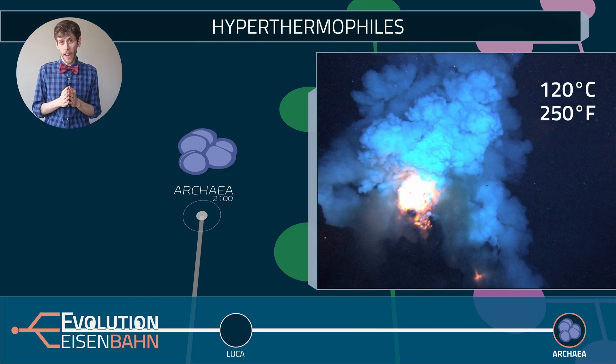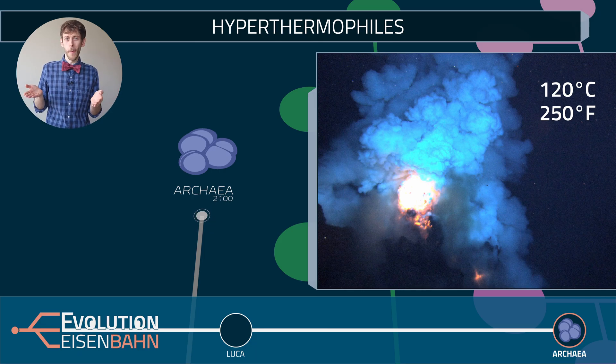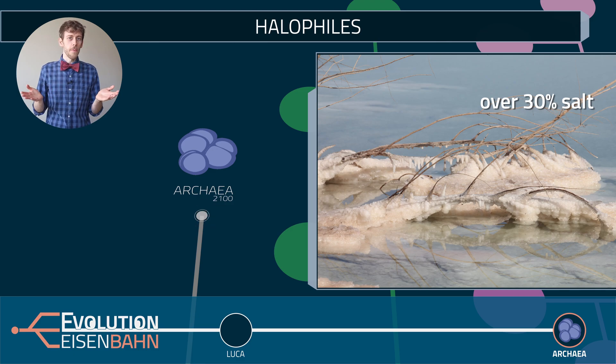There are hyperthermophiles that thrive at 120 degrees Celsius. Water only goes up to 100 degrees, so you can't even reach that without using a pressure cooker or, you know, by being deep in the ocean. And there are salt-resistant halophiles, which live in water that's more than 30% salt. That's 10 times saltier than seawater. Any other cell would shrivel up.